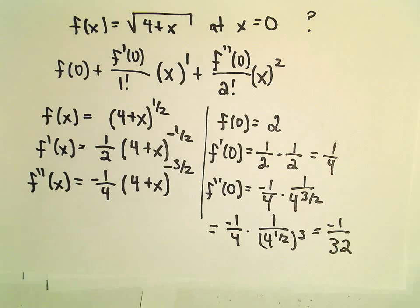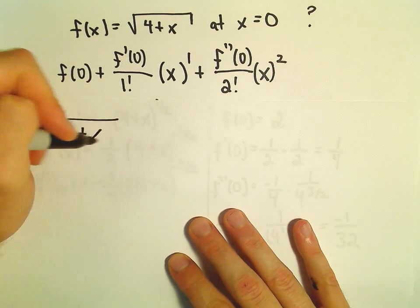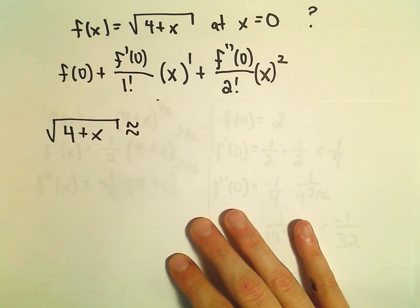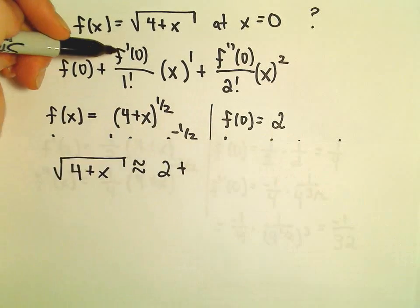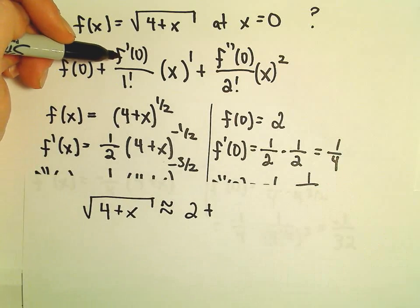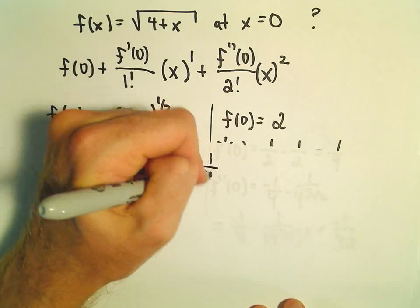So now all I have to do is just plug these in. So we can approximate the square root of 4 plus x. We can say that's roughly equal to f of 0, which is 2, plus f prime of 0, which we said was 1 fourth. And 1 fourth over 1 factorial is just 1 fourth.